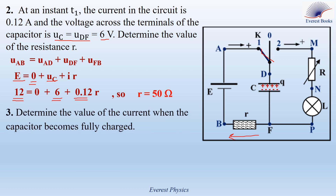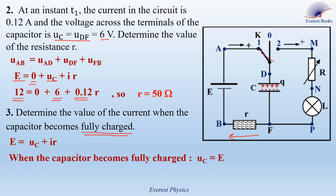Part 3: Determine the value of the current when the capacitor becomes fully charged. Applying Kirchhoff's voltage law: E equals UC plus rI. When the capacitor becomes fully charged, UC equals E. Substituting: E equals E plus rI, which means 0 equals rI. Since r is not equal to 0, the current is equal to 0 at the end of the charging process.